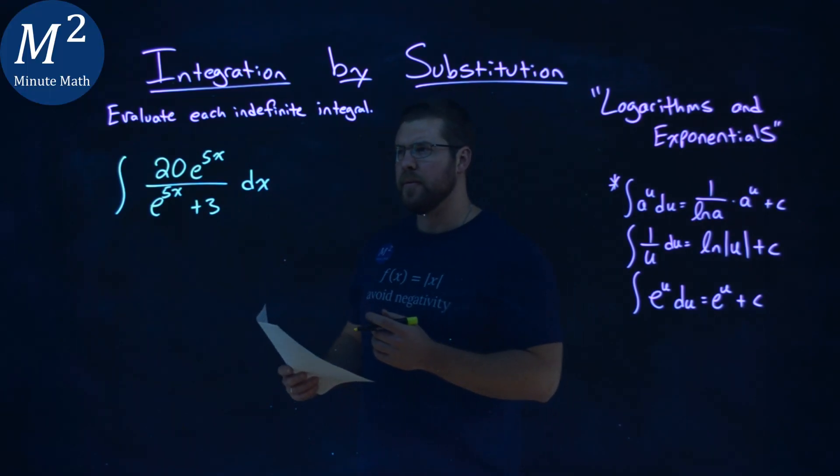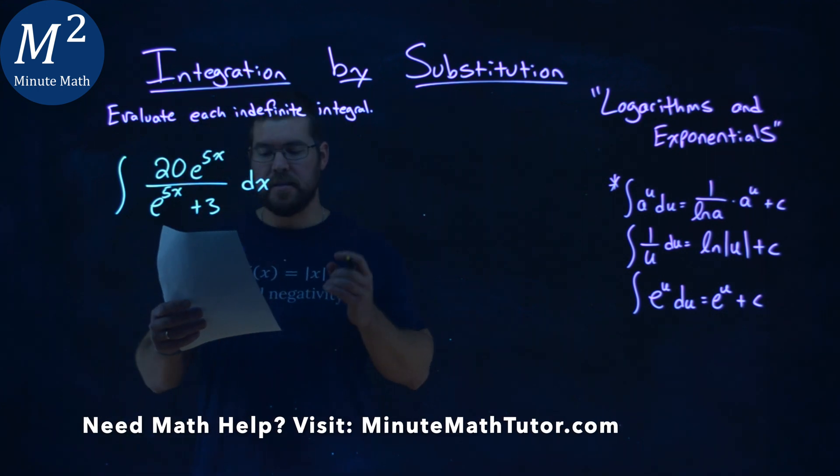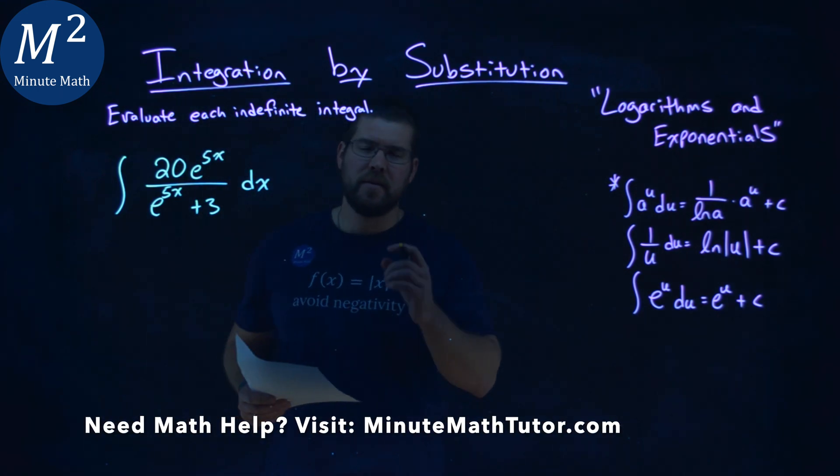We're given this problem right here, the integral of 20e to the 5x over e to the 5x plus 3 dx, and we have to evaluate this indefinite integral.